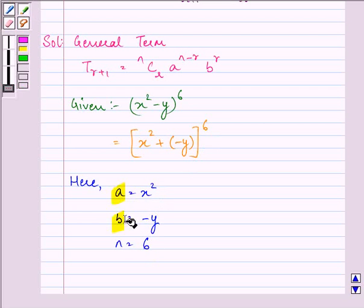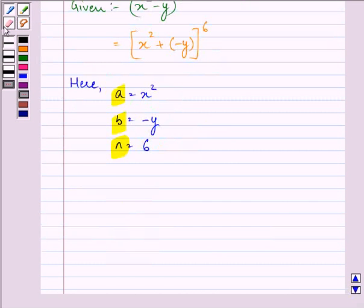in the formula that is mentioned in the key idea, we have T r plus 1 is equal to 6Cr, a that is x squared raised to n minus r, b that is negative y raised to the power r.